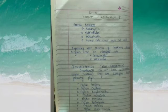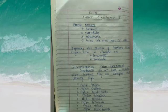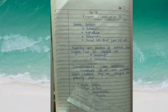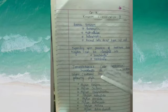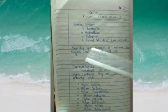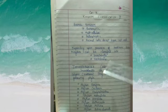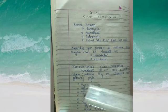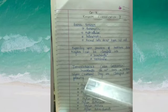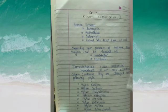In previous classes we have discussed invertebrates and vertebrates. In this session we will discuss how invertebrates can be classified into different phyla. Invertebrates can also be called non-chordates. If a backbone is present, those are vertebrates; if the backbone is absent, those are invertebrates. So invertebrates do not have a vertebral column.